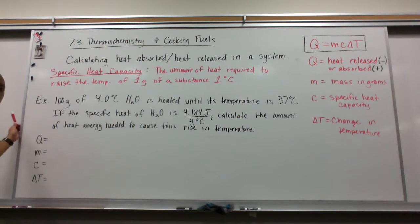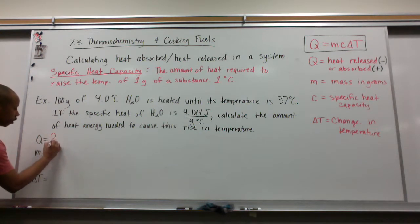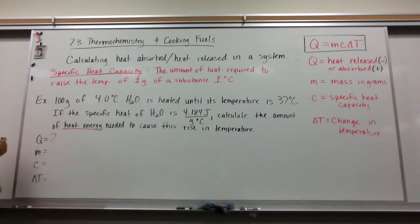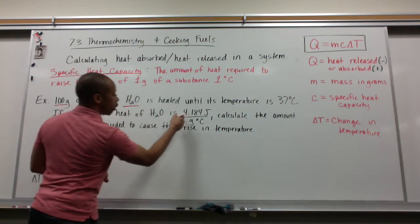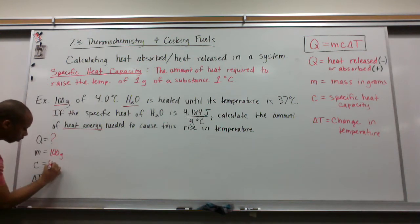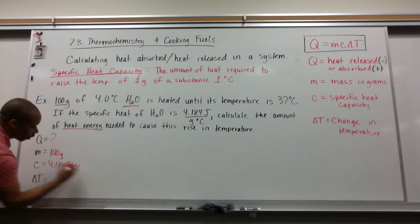So, let's try to solve this. First thing we want to do is figure out what our variables are and fill them in. We don't know the heat. That's what the question is asking for. We know the mass is 100 grams. C, the specific heat, we're talking about water here. Specific heat of water is 4.184 joules per gram degree Celsius.